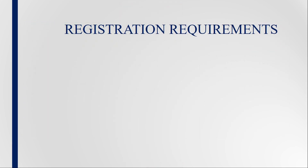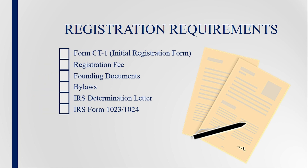Now let's go over the steps to register with the Registry. First, your organization must complete and file the Initial Registration Form, Form CT-1, with the required registration fee, and provide copies of the organization's Articles of Incorporation and Bylaws. Also, if available, please submit copies of the IRS Determination Letter and the organization's Application for Tax-Exempt Status, IRS Form 1023 or 1024.